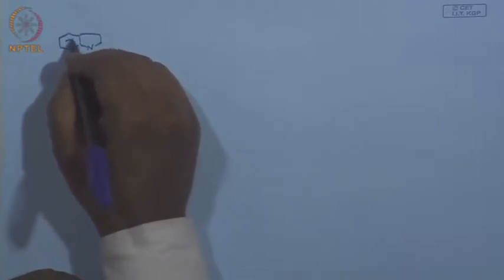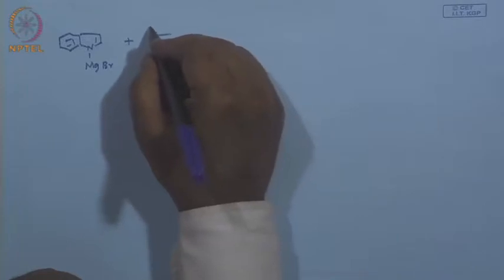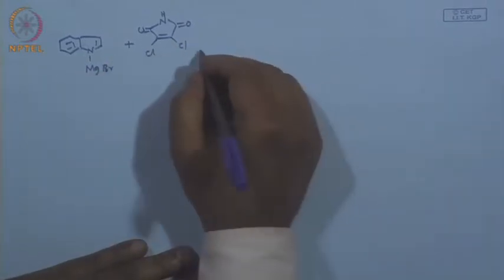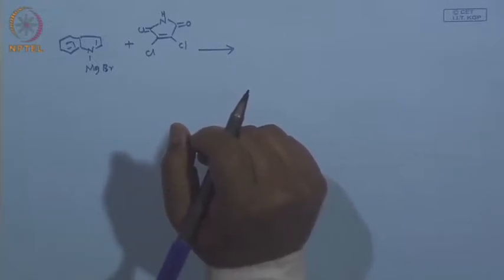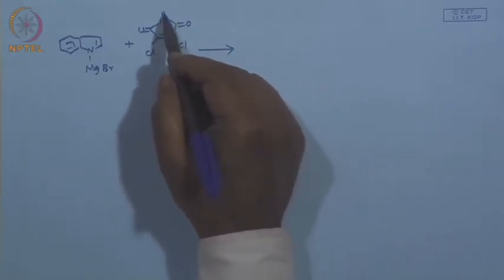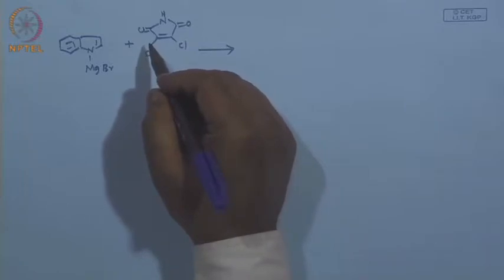Now look at a similar but slightly different reaction. You take indole magnesium bromide, and in this case the reactant is an imide — succinimide — substituted with two chlorine atoms. When you mix them together, we have to consider that this nitrogen is highly acidic because it is an imide. It can destroy part of the reagent. Also, the amide carbonyls are not very reactive towards Grignard reagents — all of us know this.